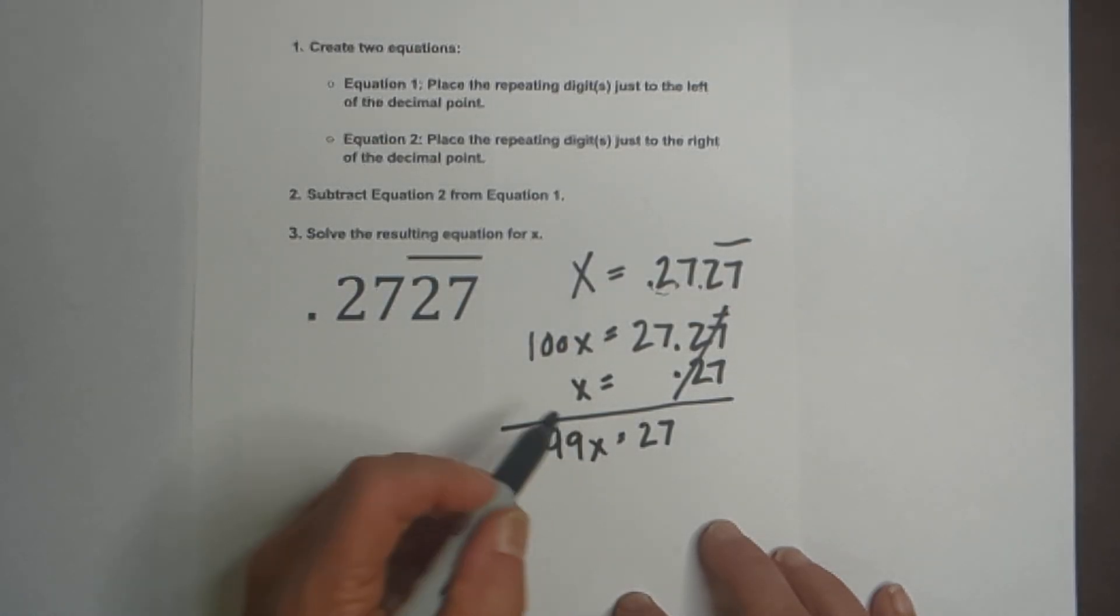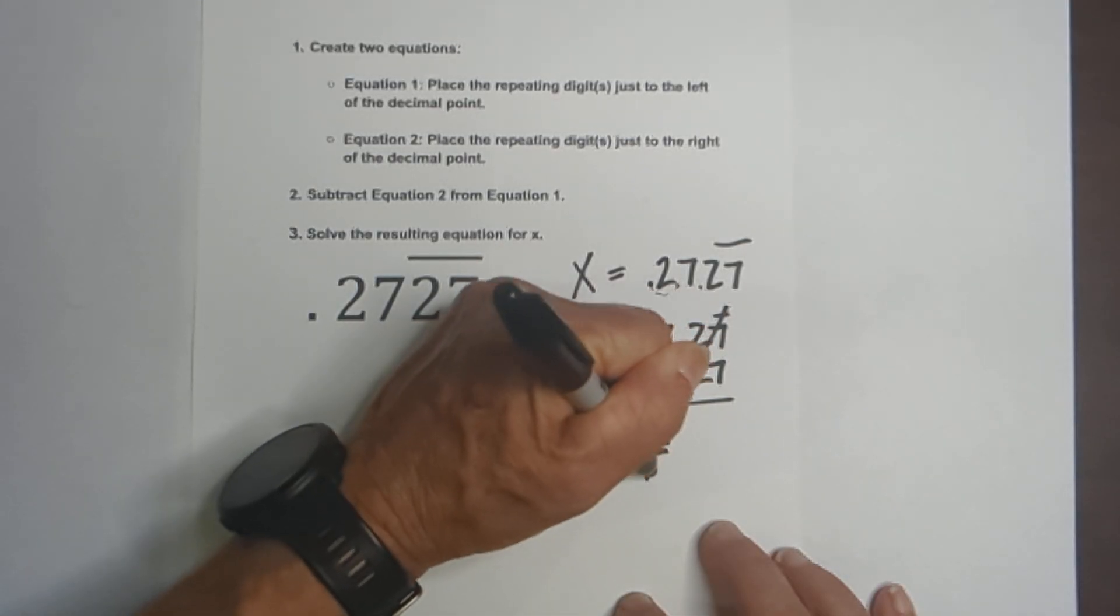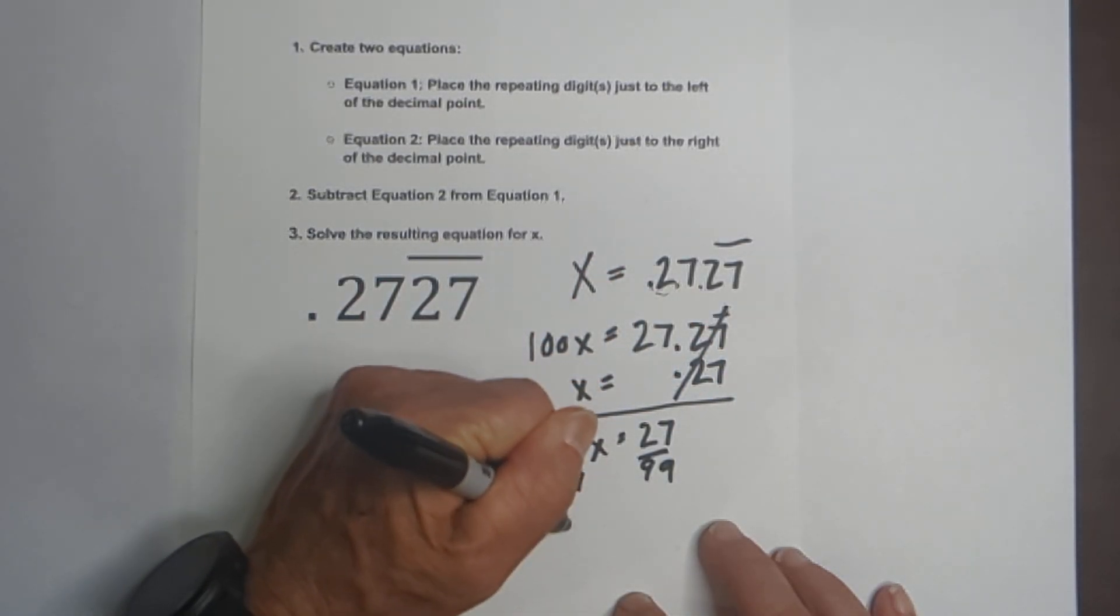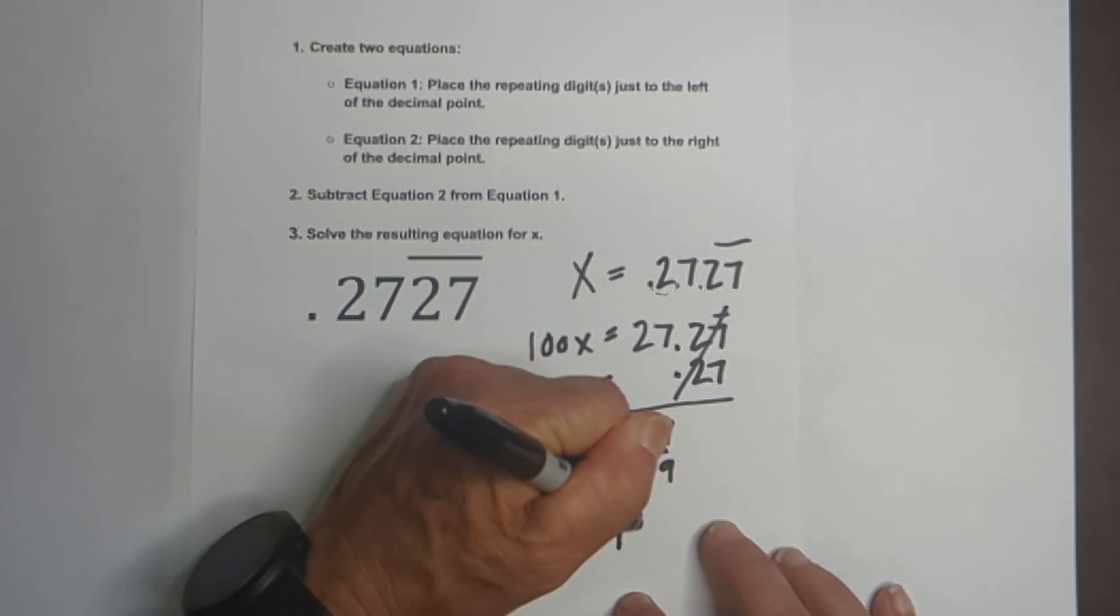So now all we do is solve for x by dividing through by 99 on both sides. These cancel. So we have x is equal to 27 over 99.